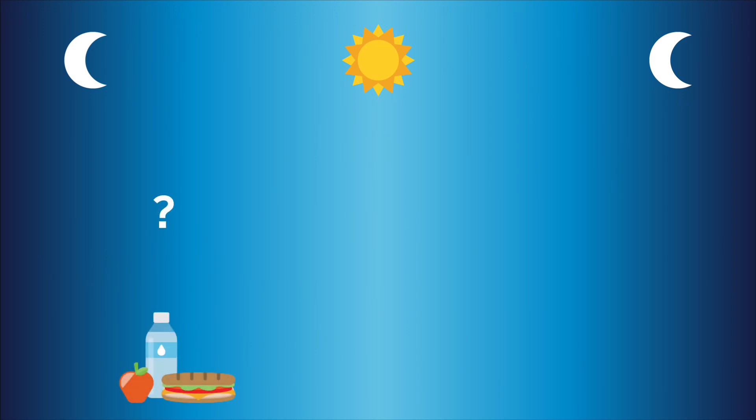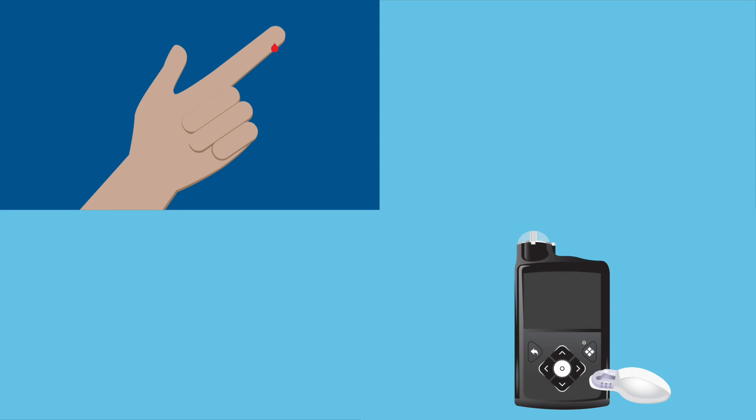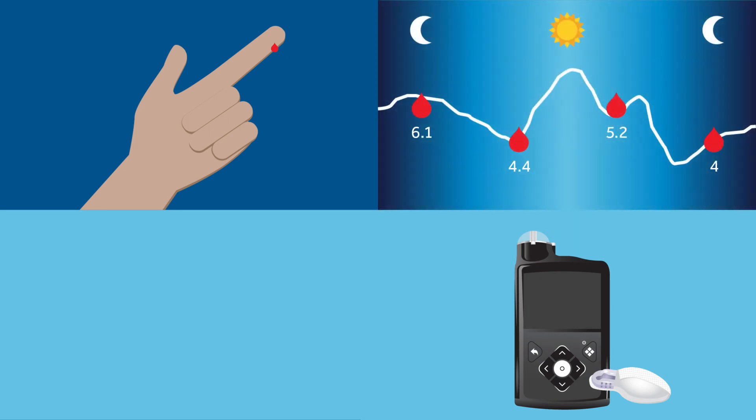Using CGM lets Lisa see these effects on her glucose throughout the day. It measures glucose levels every five minutes, day and night, filling in the gaps between finger sticks. Lisa will still need to check her BG with a meter, but she will have much more information on her glucose and will be able to set up alerts for her lows.